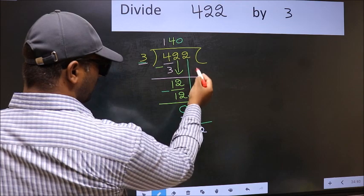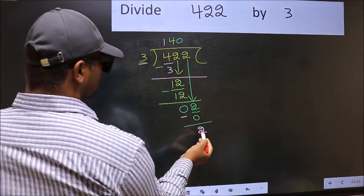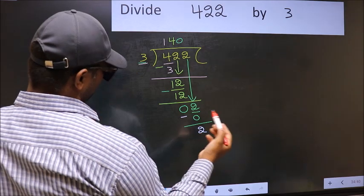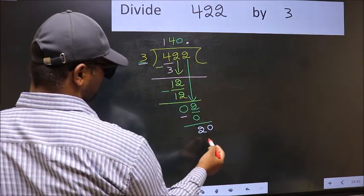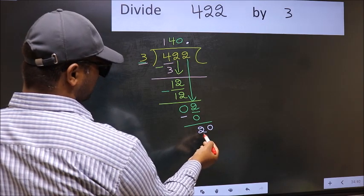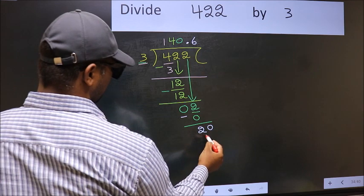Over here, we did not bring any number down, and 2 is smaller than 3. So now we can put a dot and take 0. So 20. A number close to 20 in the 3 table is 3 sixes, 18.